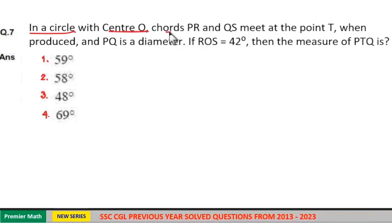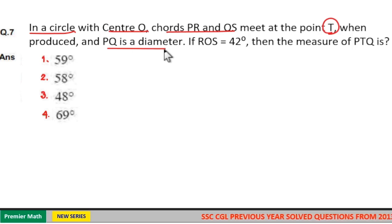In a circle with center O, chords PR and QS meet at point T when produced, and PQ is a diameter. If angle ROS is 42 degrees, then the measure of angle PTQ is?